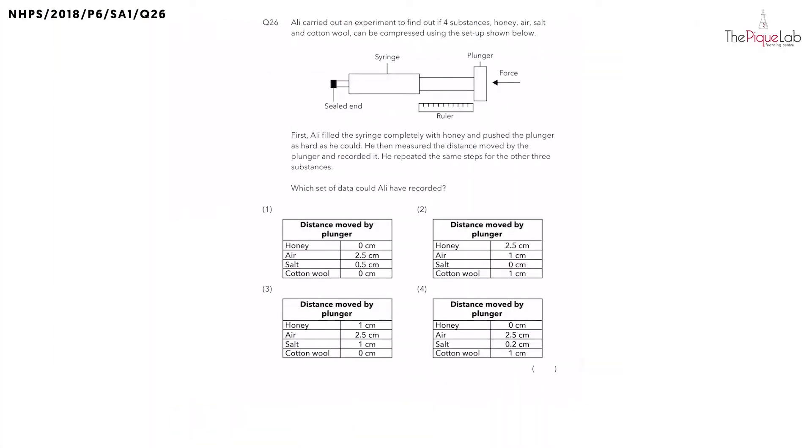Question 26. Ali carried out an experiment to find out if four substances - honey, air, salt, and cotton wool - can be compressed using the setup shown below. First, Ali filled the syringe completely with honey and pushed the plunger as hard as he could.